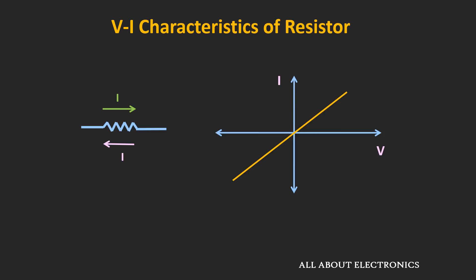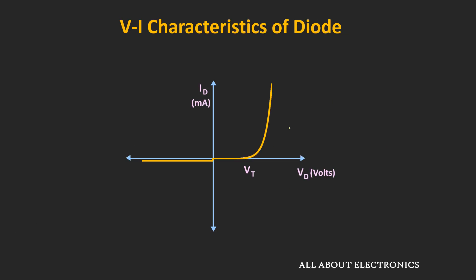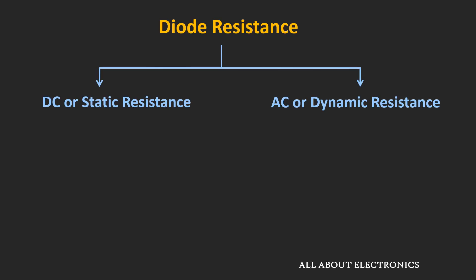A resistor offers constant resistance for different operating voltages and currents. In the case of a diode, depending upon the operating condition, the resistance offered by the diode will change. Depending upon the applied input signal, the diode resistance can be categorized into two categories: one is the DC or static resistance, and the second is the AC or dynamic resistance. Let's first talk about the DC resistance.